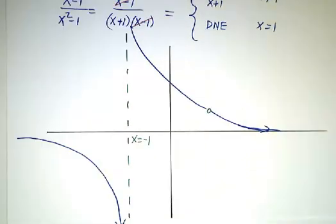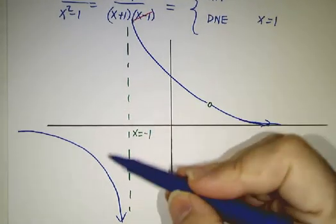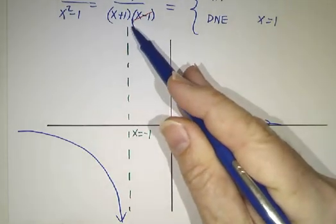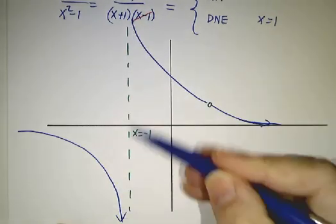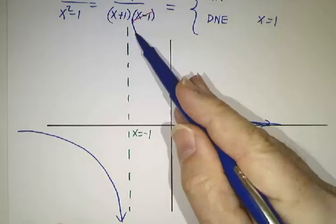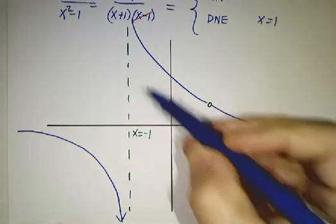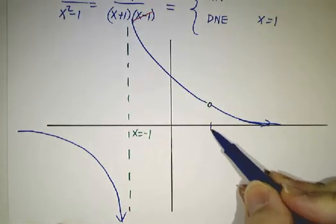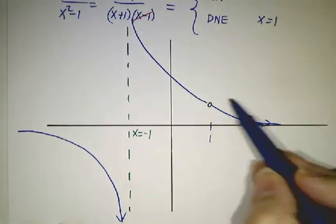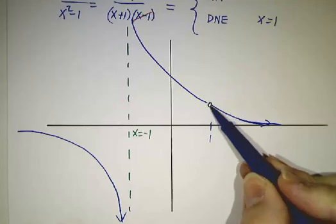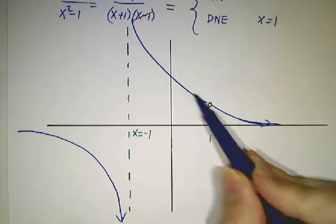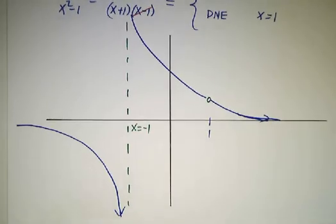So the graph looks like this. It blows up when x equals negative one. Blows up positive when you're slightly bigger than negative one. Blows up negative when you're slightly less than negative one. It does not blow up near x equals one. It just has a hole, a place where the function is not defined. But it doesn't blow up, it does not have a vertical asymptote.